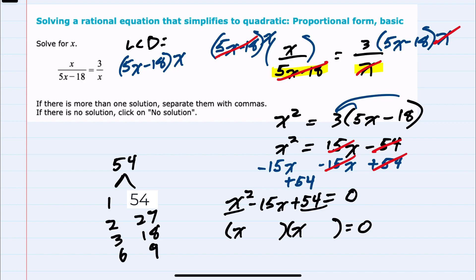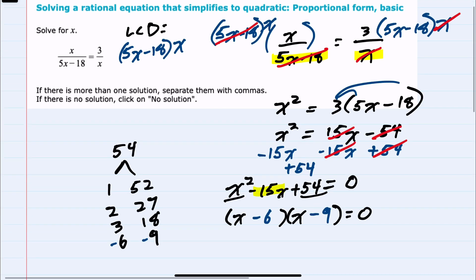And since I want to get a negative 15x in the center, I can use a negative 6 and a negative 9. So x minus 6, x minus 9 is our factored quadratic.